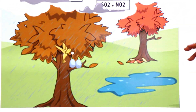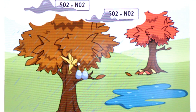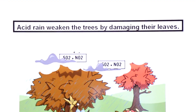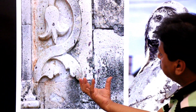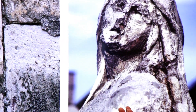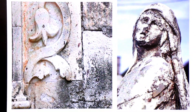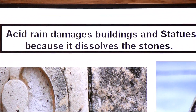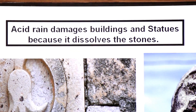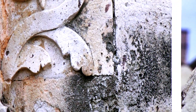After that, if acidic rain falls on trees it damages the leaves. Acid rain weakens the trees by damaging their leaves. Now look at these buildings — the stones have been considerably damaged. And if you look at this statue, you can see it has also been considerably damaged. This damage was caused by acidic rain. Acidic rain damages building stones and statues because it dissolves the stones, as stone material is used in many buildings and statues are also made from stone.